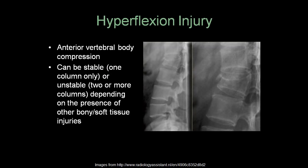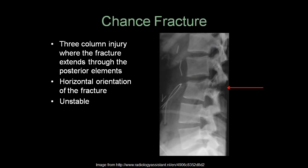With a hyperflexion injury of the thoracic and lumbar spine, the anterior vertebral body is compressed. These can be stable if only one column is involved, or unstable if two or more columns are involved. A chance fracture is a three-column injury where the fracture extends through the posterior elements with a horizontal fracture line orientation. This is considered unstable because it goes through all columns.